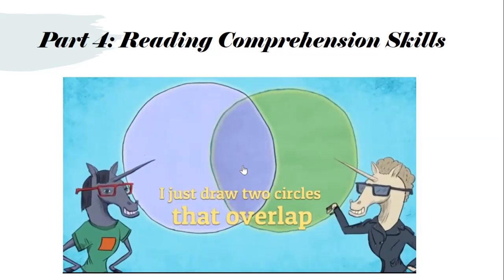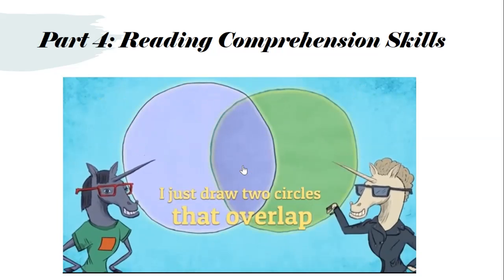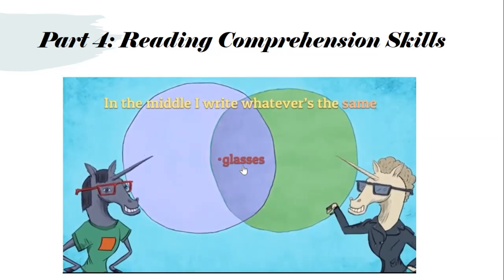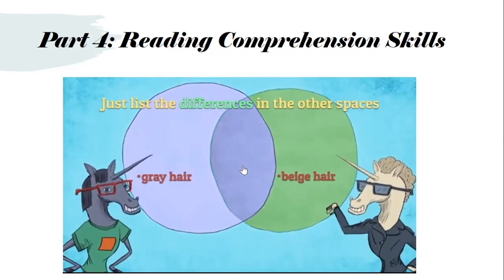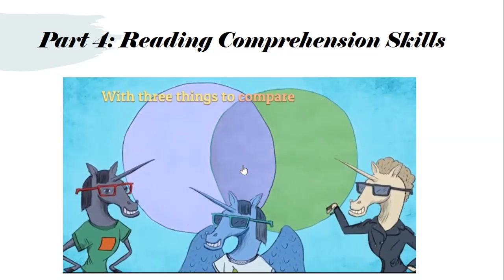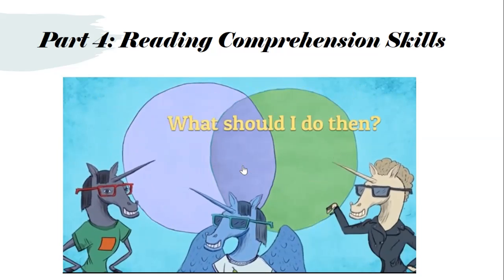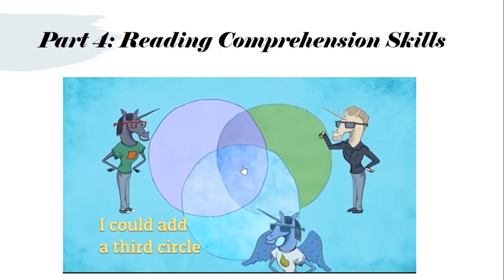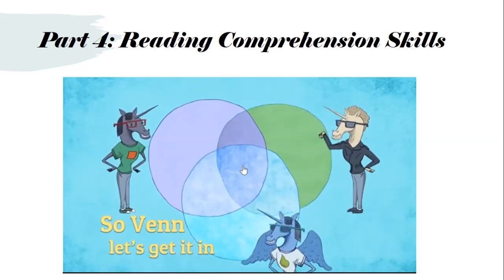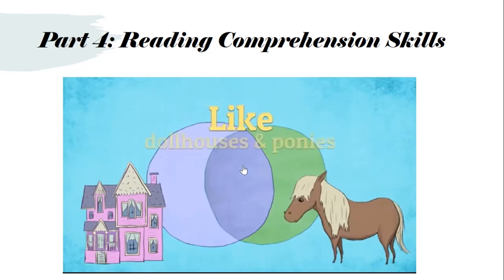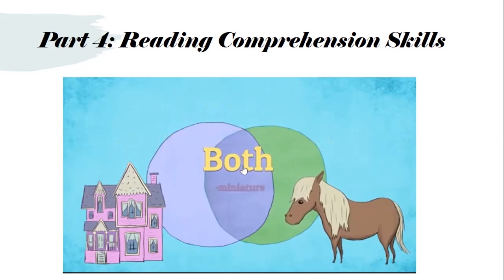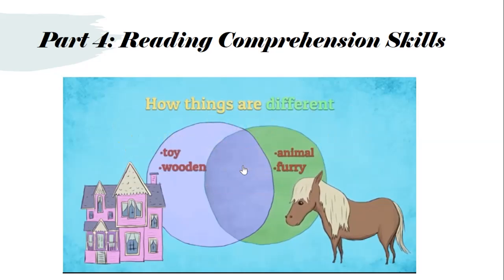I just draw two circles that overlap. In the middle, I write whatever's the same. Just list the differences in the other spaces. With three things to compare, I could add a third circle. I compare when I say how things are similar — like dollhouses and ponies, both miniature. I contrast when I say how things are different. Give examples and get specific.